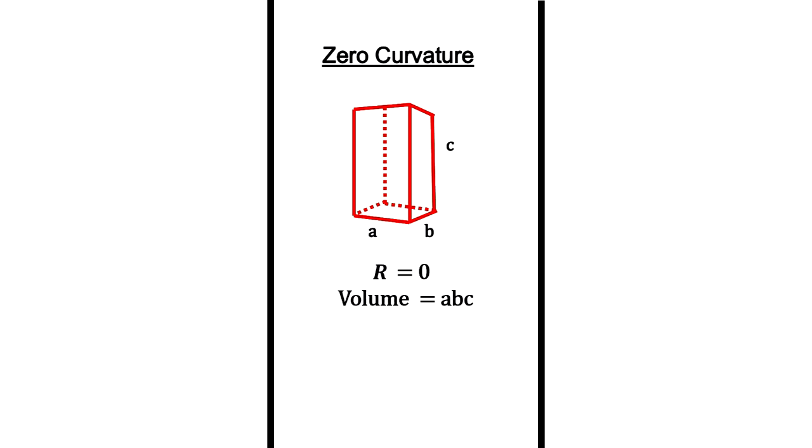For example, in Euclidean flat space, a cuboid's volume is A times B times C. The yellow lines represent geodesics inside the box.